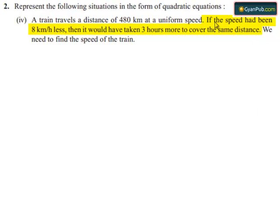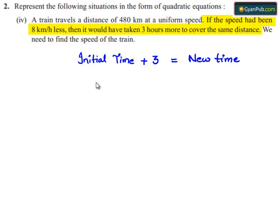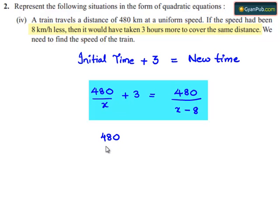According to the given condition, if the speed had been 8 km per hour less, it would have taken 3 hours more to cover the same distance. So the original time plus 3 hours equals the new time: 480 divided by x, plus 3, is equal to 480 divided by x minus 8.